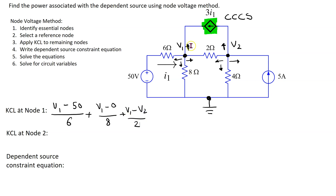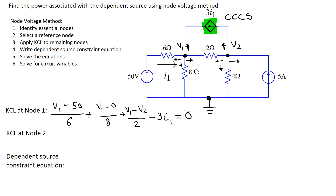This last branch current — we can see that we have a controlled current source in this branch. The magnitude of this branch current must be equal to the magnitude of the current source. However, the assumed branch current direction is opposite to the direction of the current source. Hence, we get minus 3I1 equal to 0.